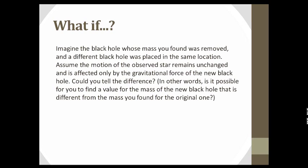What if the black hole whose mass you found was removed and a different black hole was placed in the same location? Assume the motion of the observed star remains unchanged, affected only by the gravitational force of the new black hole. Would I be able to tell the difference? If the motion of the star remained unchanged, the force would remain the same and I would not be able to tell. If the motion is the same, the black hole mass must also be the same. The only way to find a different mass is if the motion of the star changes — new positions of motion would yield a new mass for the black hole.